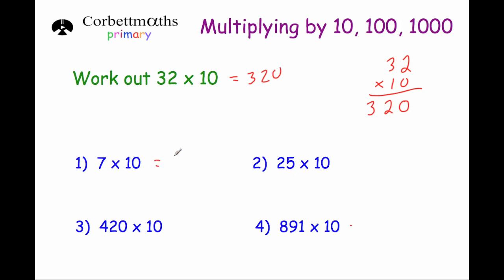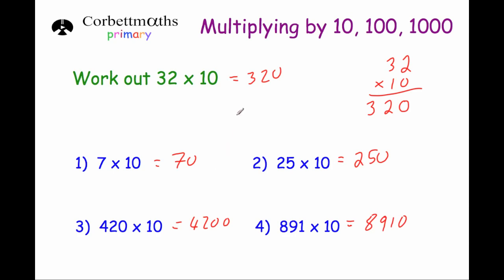So if we do 7 multiplied by 10, the answer will be 70. 25 multiplied by 10, the answer will be 250. 420 multiplied by 10, the answer will be 4200 — it already had one zero, so we add another to give two zeros on the end. And 891 multiplied by 10 gives 8910. When you multiply by 10, each digit moves one column to the left in the place value, and you get a 0 in the units column as a placeholder.